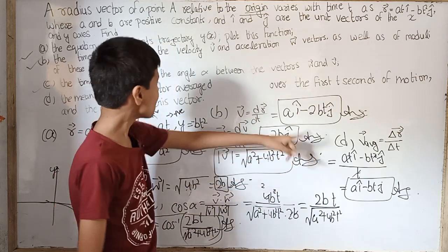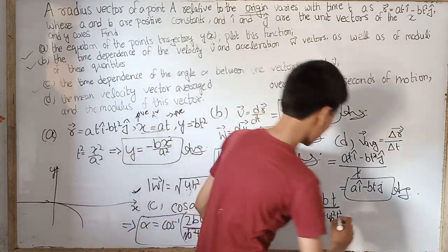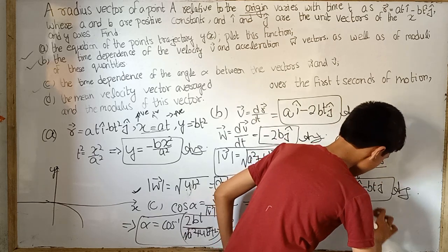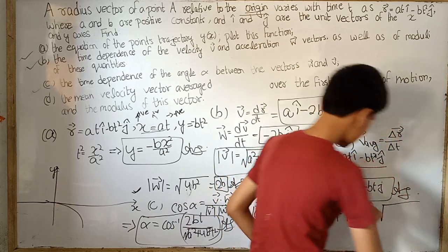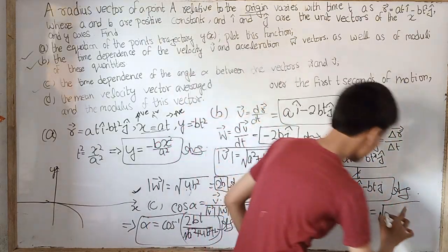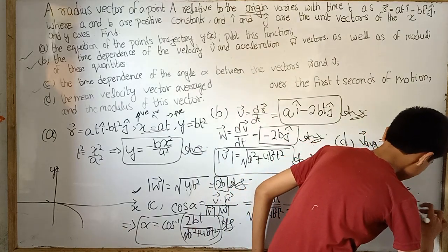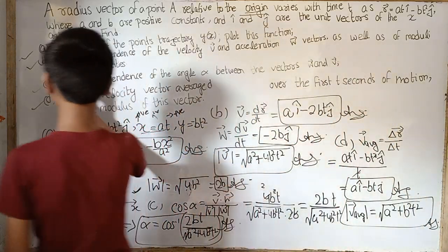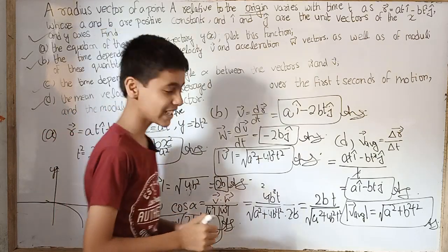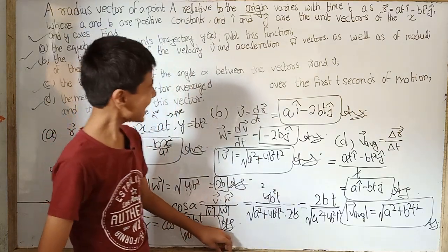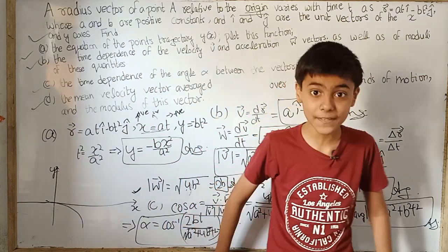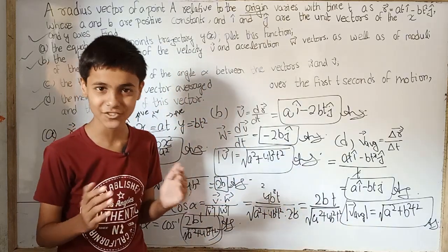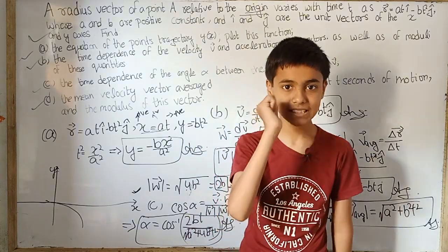The modulus of the mean velocity vector is: |v_avg| equals √(a² + b²t²). That solves all four parts of the problem. This was a fun and straightforward question from Irodov. Next we will look at question 25 from the kinematics section. Thanks for watching!